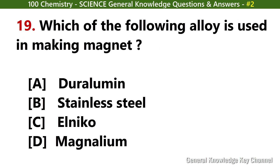Which of the following alloys is used in making magnets? Answer C: Alnico.